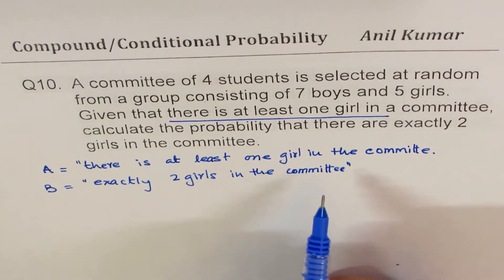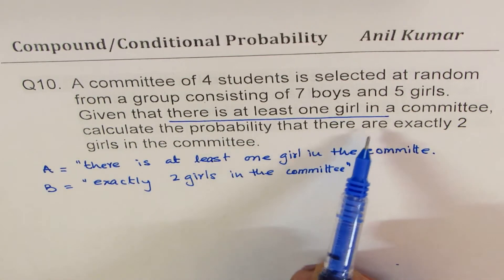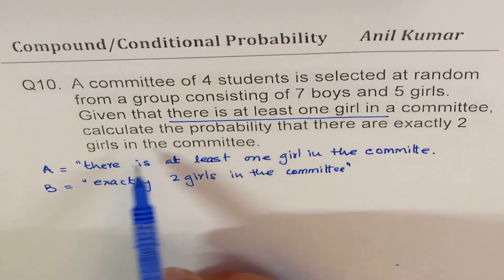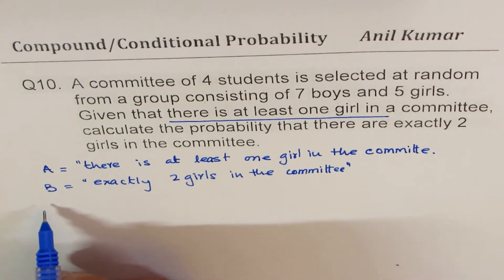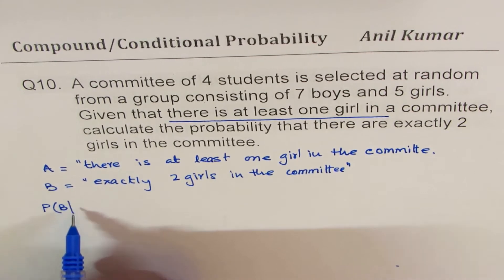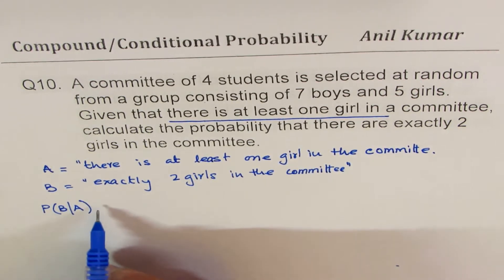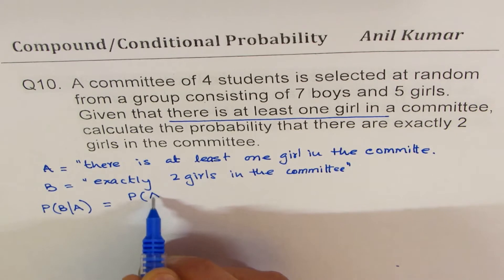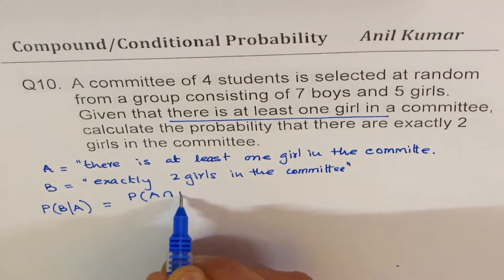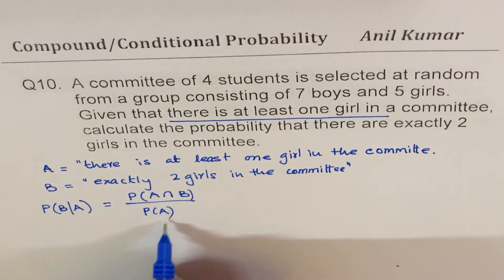So that is the way to define the events. We want to calculate the probability that there are exactly two girls — that is B — given that there is at least one girl. So what we need to calculate is the probability of B given A, which is probability of A intersection B divided by probability of A.